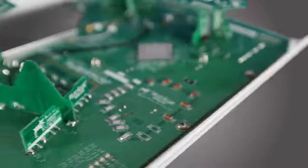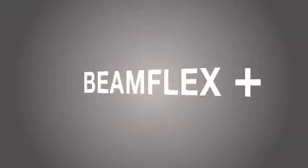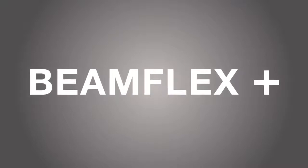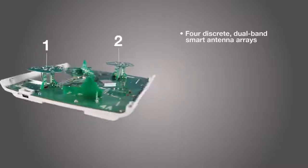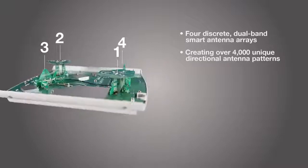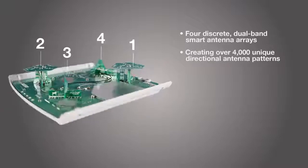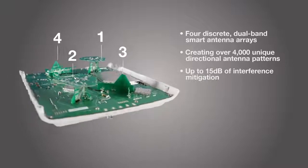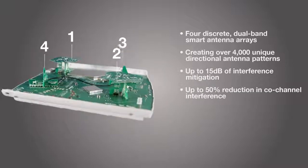Inside every R710, we've integrated Ruckus patented BeamFlex Plus adaptive antenna technology. Four discrete dual-band smart antenna arrays are capable of dynamically creating more than 4,000 unique directional antenna patterns, mitigating up to 15 dB of RF noise, and reducing co-channel interference by 50% or more.